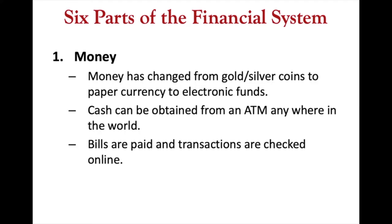Starting with part one now: money. Money has essentially three functions. The first function is as a means of exchange. It's there to avoid the problems that you have in a barter economy — for example, the double coincidence of wants. So if you have a motorcycle and you want to buy a car, and there's no money, you would need someone who has exactly the car you want and needs exactly the motorcycle you want to sell.